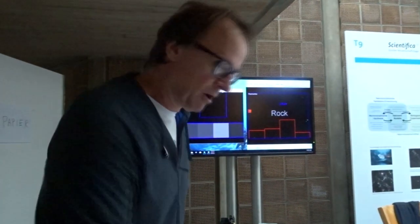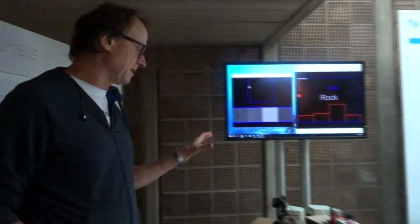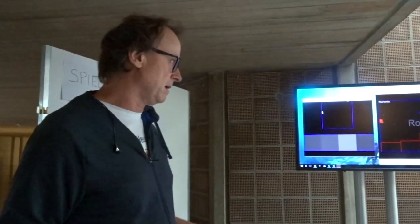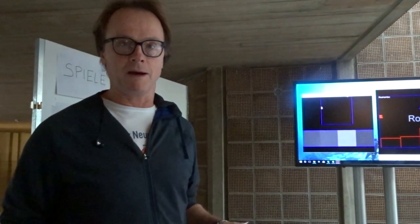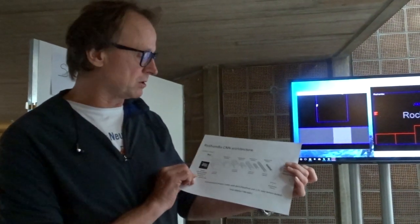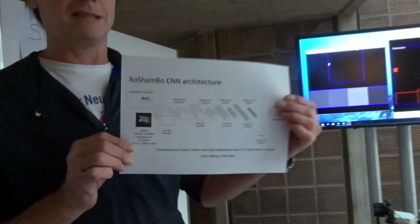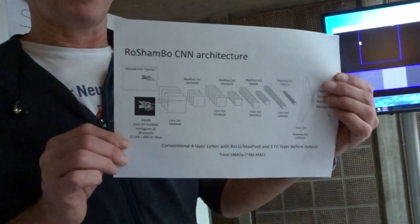Here's what the chip looks like. And what we've done here in this demonstration is we've taken the spike events from the silicon retina, and we accumulate a thousand of them, and then we drive a convolutional neural network which predicts the symbol of Rochambeau.